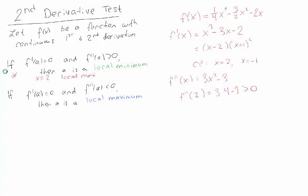Pretty easy. Now let's apply it to the other critical point. I'm going to plug in -1, but if I plug in -1, I get 3 times 1 minus 3, which is equal to 0. That means the second derivative test doesn't tell me what's going on at -1. It could be a local max, it could be a local min, it could be an inflection point.